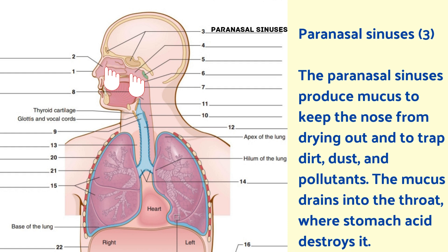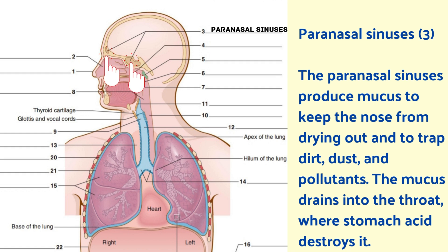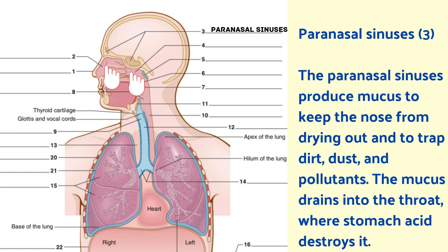The paranasal sinuses produce mucus to keep the nose from drying out and trap dirt, dust and pollutants. The mucus drains into the throat where stomach acid destroys it.